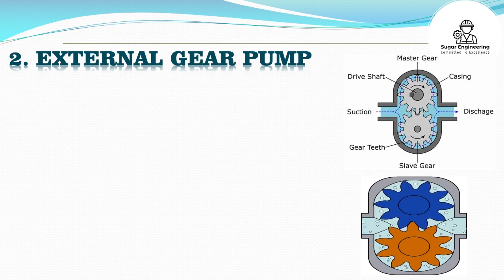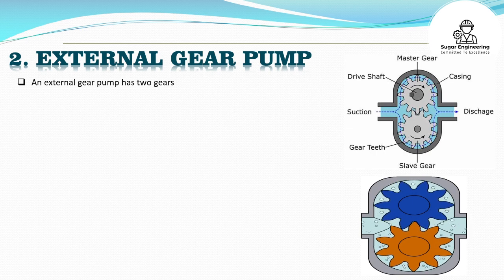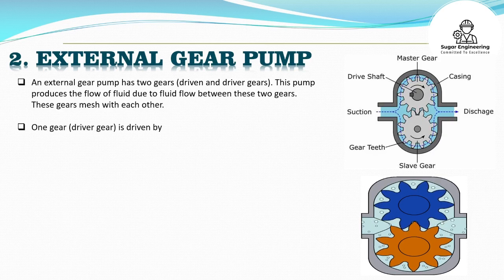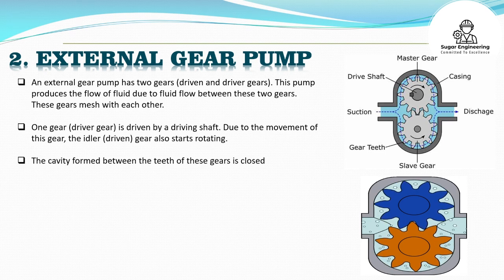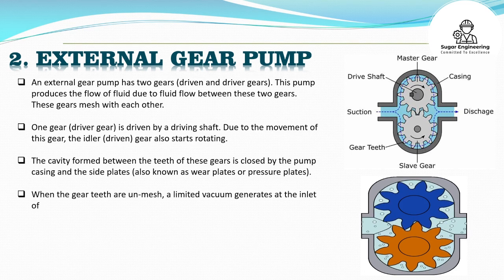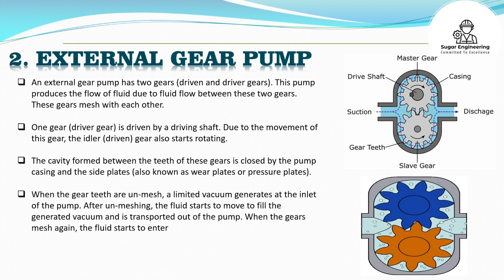An external gear pump has two gears — driven and driver gears. This pump produces the flow of fluid due to fluid flow between these two gears. These gears mesh with each other. One gear, the driver gear, is driven by a driving shaft. Due to the movement of this gear, the idler or driven gear also starts rotating. The cavity formed between the teeth of these gears is closed by the pump casing and the side plates, also known as wear plates or pressure plates. When the gear teeth unmesh, a limited vacuum generates at the inlet of the pump. After unmeshing, the fluid starts to move to fill the generated vacuum and is transported out of the pump. When the gears mesh again, the fluid starts to enter again inside the pump.